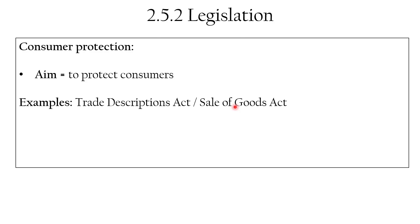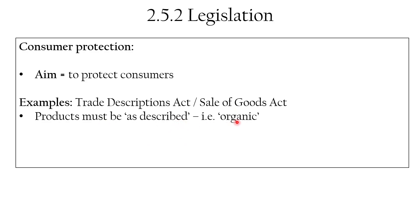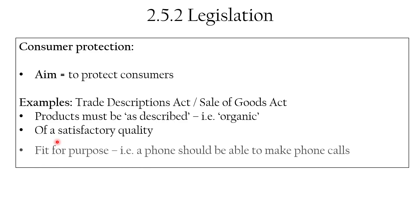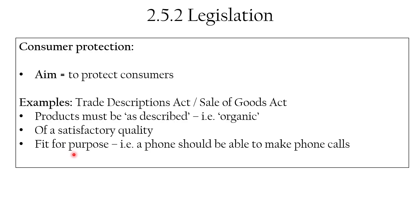The Sale of Goods Act covers the laws around selling to people. Products must be as described — so if you describe a cheese as organic, it actually has to be organically produced. Products must be of satisfactory quality — if I buy a blue biro, it should write. And products must be fit for purpose — does that biro actually have ink that flows when I write? So consumer protection covers: products are as described, of satisfactory quality, and fit for purpose.